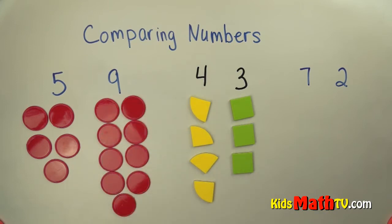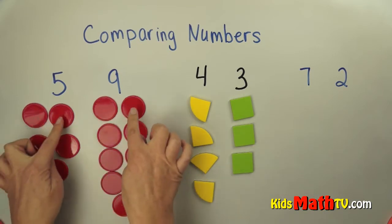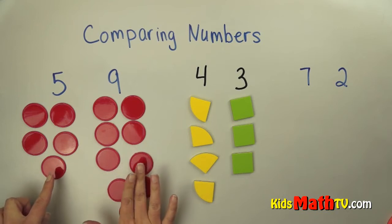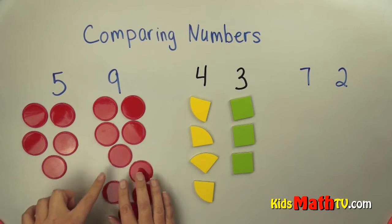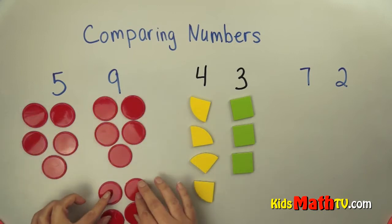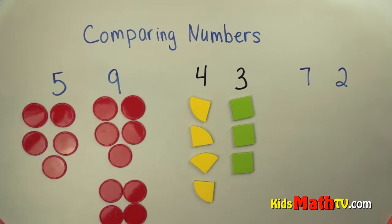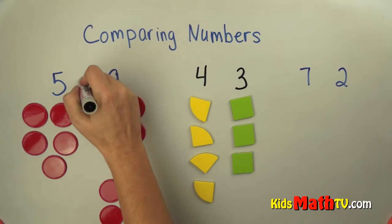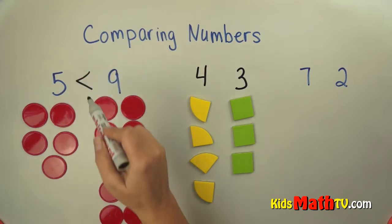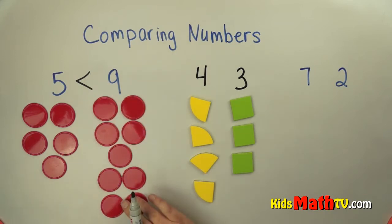So what we can do is we can compare. Here's one, these are the same, these are the same, these are the same. And then I have one more, but I have actually more here than over there. So there's five and five, but there's actually four more here. So five is less than nine. The small point goes towards the small number. The big open part goes to the bigger number.